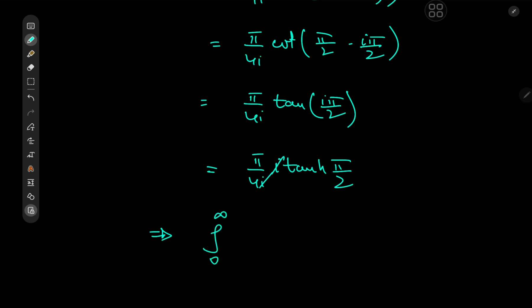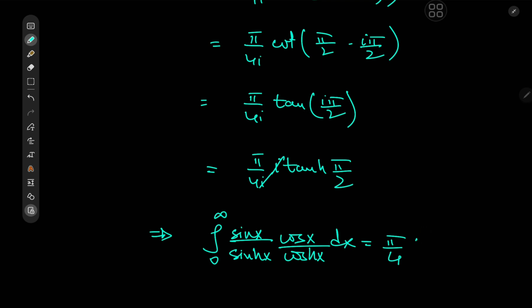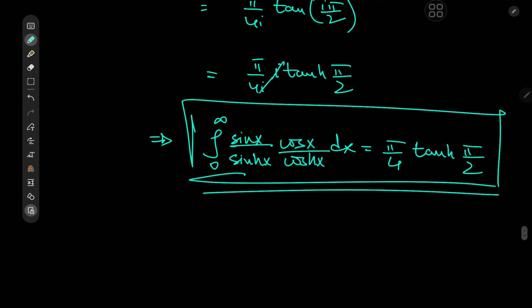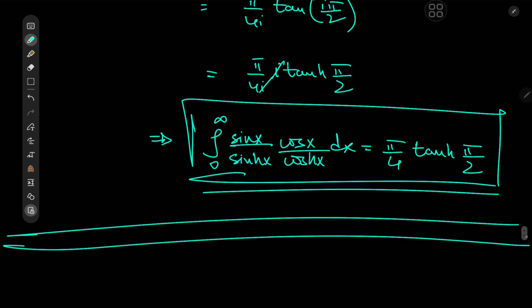The final result is that the integral from 0 to infinity of (sine x over sinh x) times (cosine x over cosh x) dx equals pi/4 times hyperbolic tangent of pi/2. A gorgeous result featuring pi and various types of trig functions. Math is awesome — I hope you enjoyed the video, be sure to like and subscribe, thank you, see you next time.